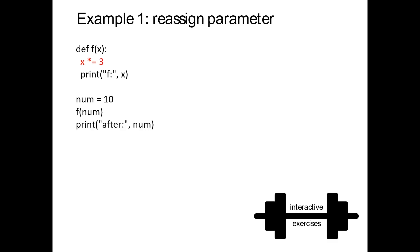I want to go over examples of where having multiple variables reference the same object can get us into trouble or be an advantage. This is most easily done in Python Tutor where we can actually see everything visually. There are interactive exercises that will probably be on the web page tomorrow evening — I've copied this code into the Jupyter notebook. I recommend copying and pasting it into Python Tutor and walking through it line by line, rather than just running it in the notebook.